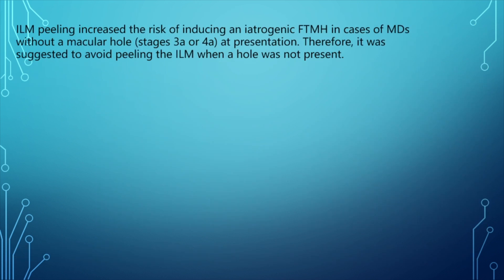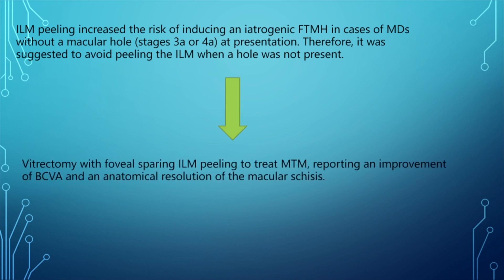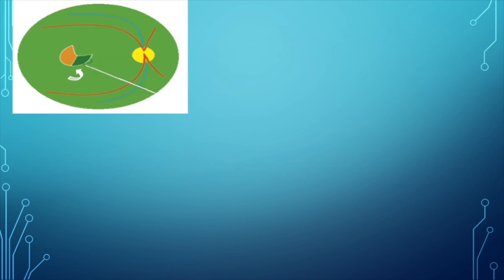Regarding foveal sparing ILM peeling: ILM peeling increases the risk of inducing an iatrogenic full thickness macular hole in cases of macular detachments that were previously absent in stages 3 and 4A. Therefore, it was suggested to avoid peeling ILM when a hole was not present. Studies have shown that vitrectomy with foveal sparing ILM peeling reports improvement in BCVA and anatomical resolution of macular schisis.